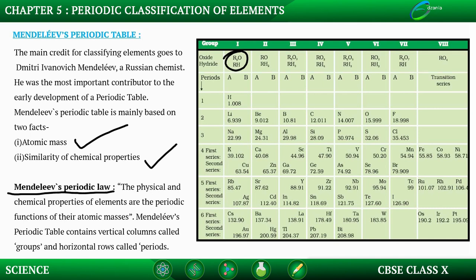In Mendeleev's periodic table, the vertical columns are called groups and the horizontal rows are called periods.